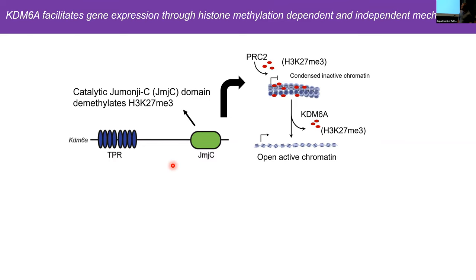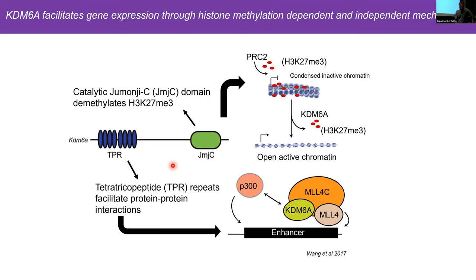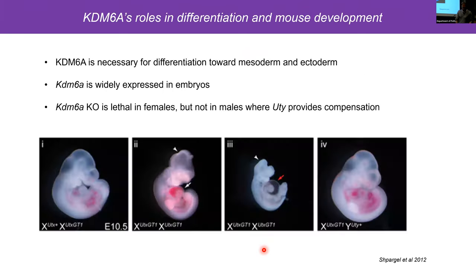Importantly, UTY — its Y-linked paralog — does not have demethylase activity; it functions only through a demethylation-independent mechanism. KDM6A also has a TPR repeat region that facilitates protein-protein interactions. It's been shown to be involved in the MLL4 complex, where it can recruit the acetyltransferase P300 to regulate enhancers — this is its demethylase-independent activity. So KDM6A has both demethylase-dependent and independent functions, whereas UTY has only the independent mechanism.